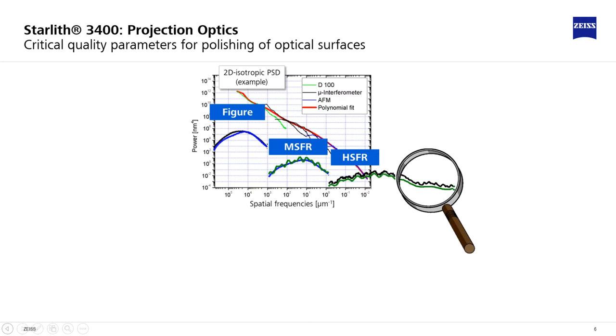The metrology for the production of EUV mirrors has to cover the complete spatial frequency band reaching from clear aperture down to 10 nm with accuracies and precision on atomic scales, without leaving any frequency gaps.